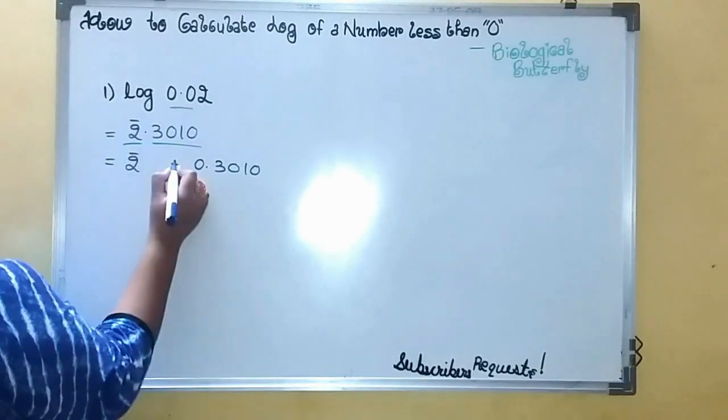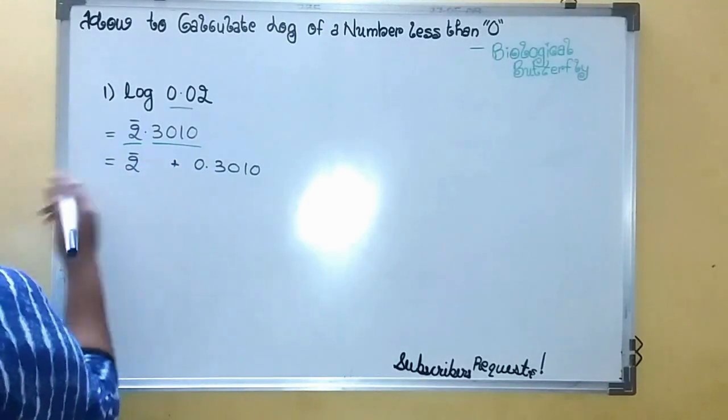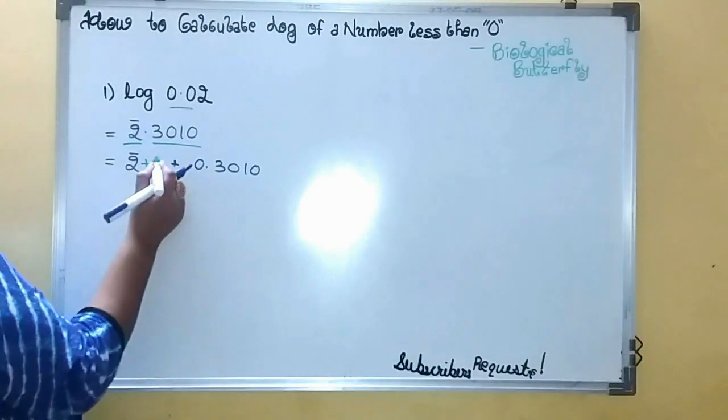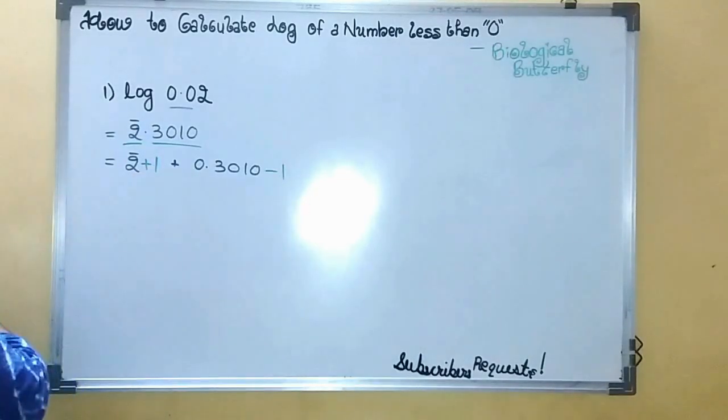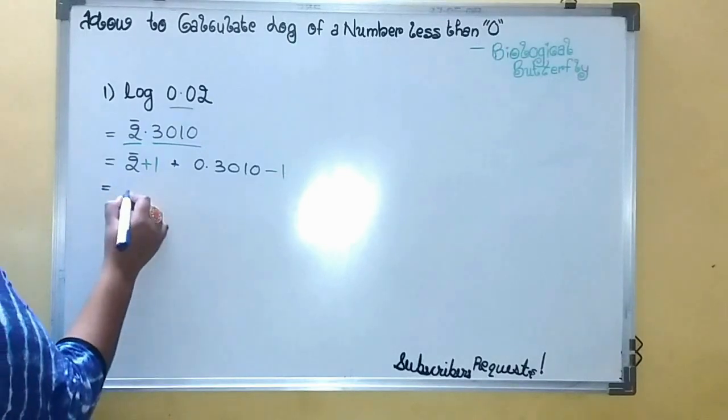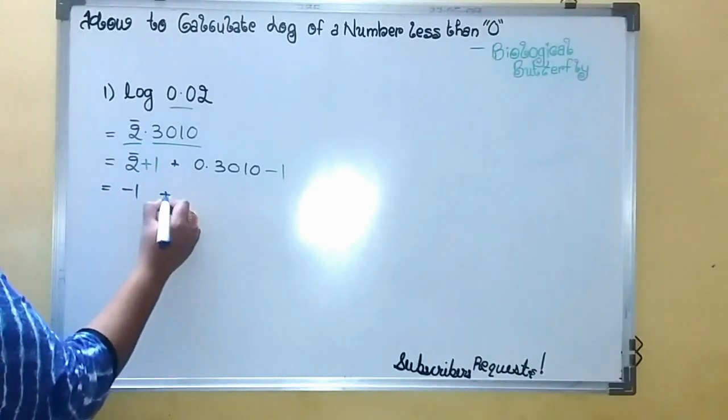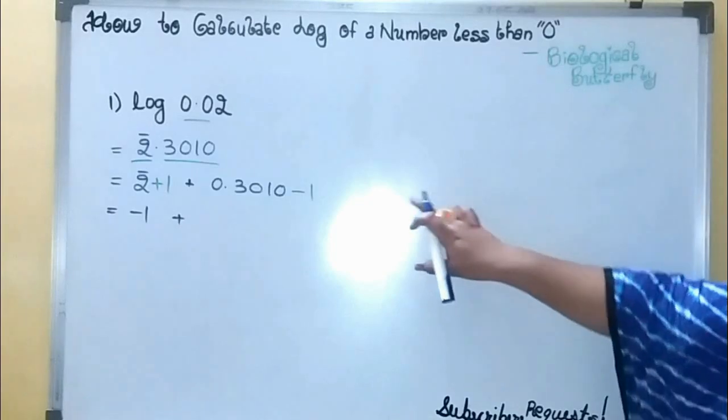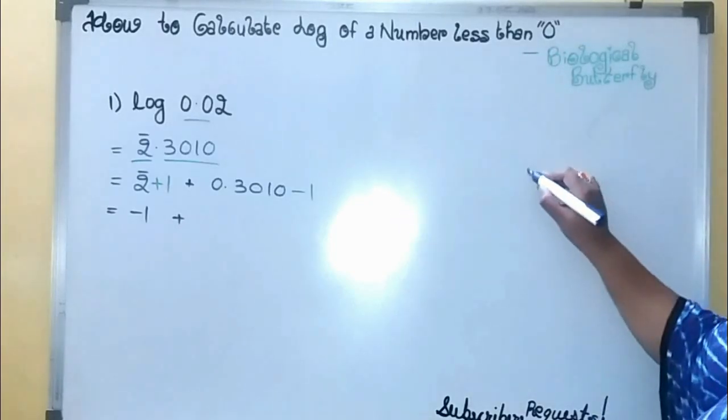And write a variation here. What you will do then: two plus one here, two minus one here, minus two plus one. One is nothing but one bar or minus one.